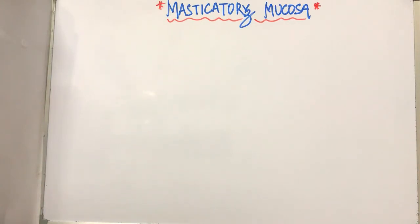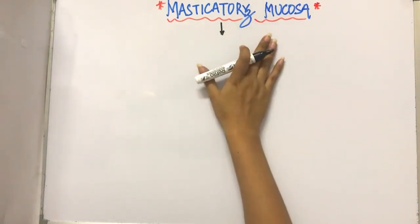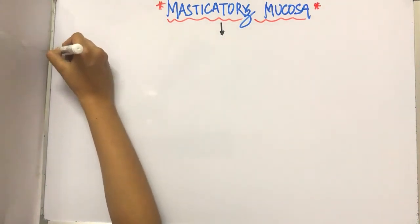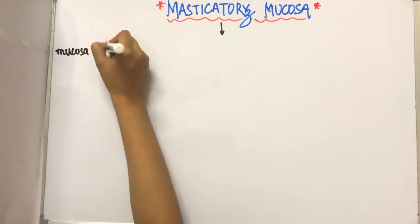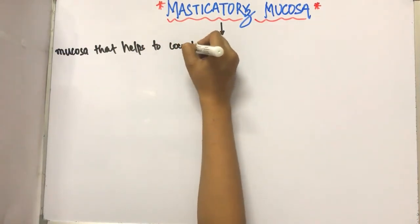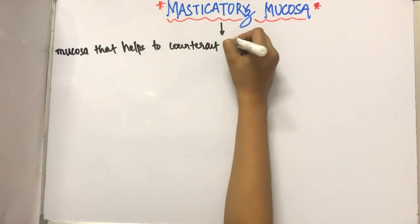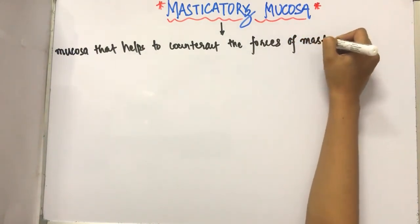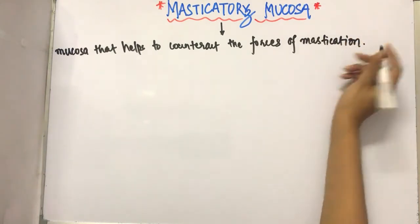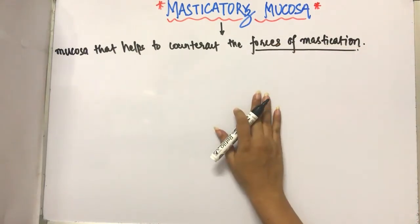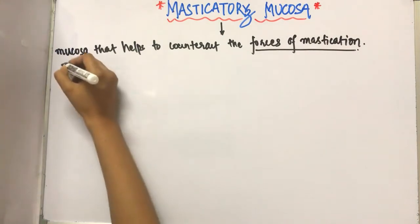First of all, let us see what is masticatory mucosa. As we can guess from the term, masticatory mucosa is the mucosa that helps to counteract the forces of mastication. That is known as masticatory mucosa. It is keratinized.